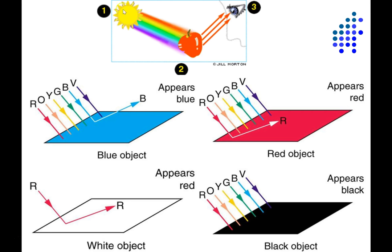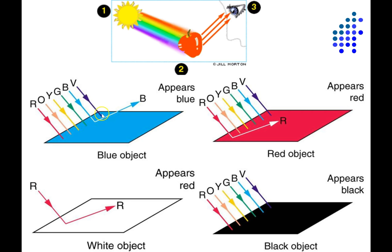Let's quickly talk a little bit about how we perceive colors on surfaces. An object that appears blue is really just absorbing most of the other wavelengths of light. So here you're seeing red, orange, yellow, green, blue, and violet light.